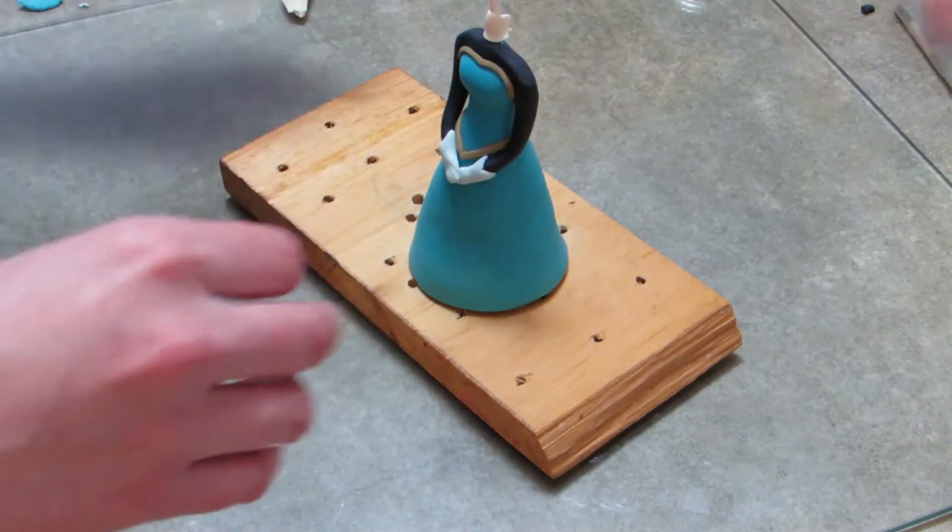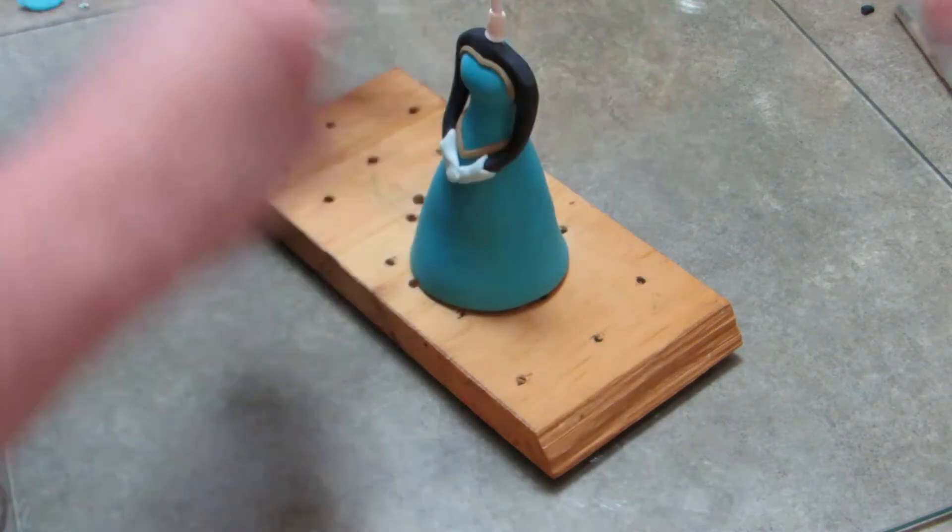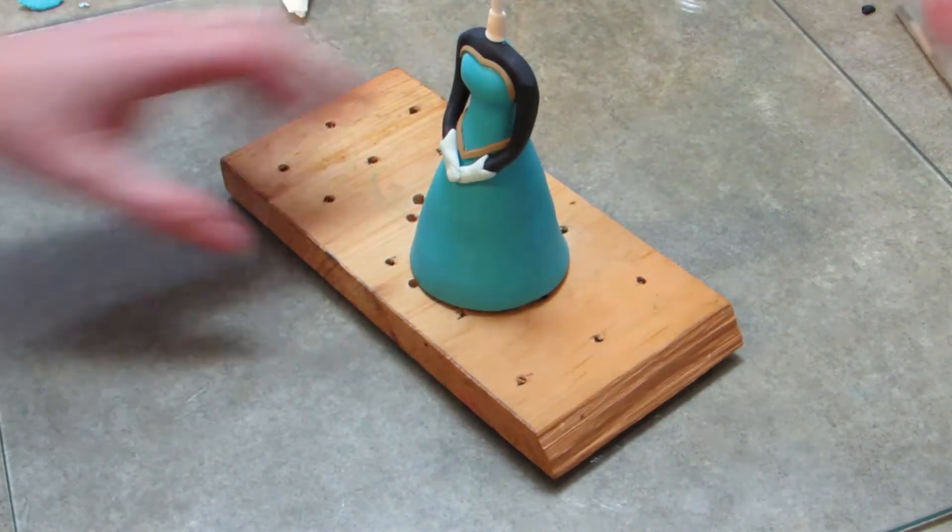She's got a long skinny little giraffe neck on her, so very thin piece wrapped around the lollipop stick is all you need. Next I'm going to do the head.